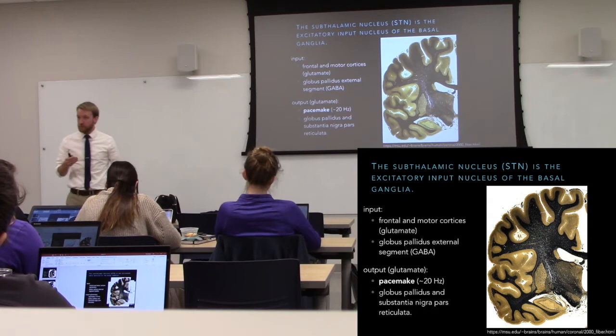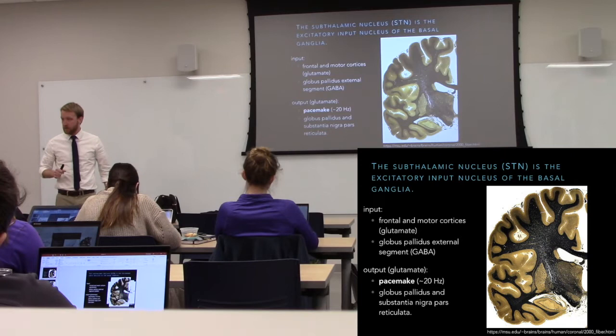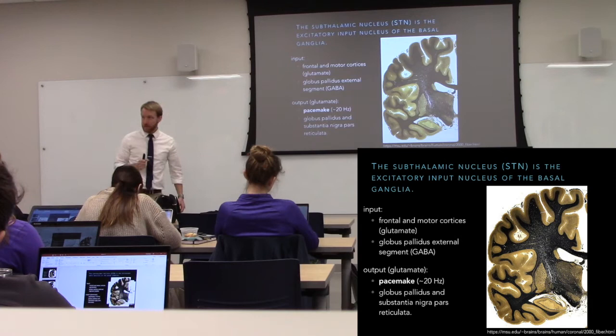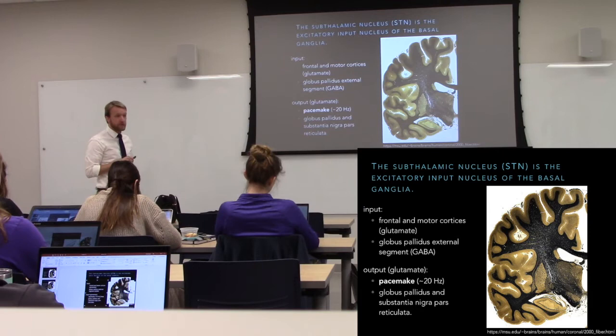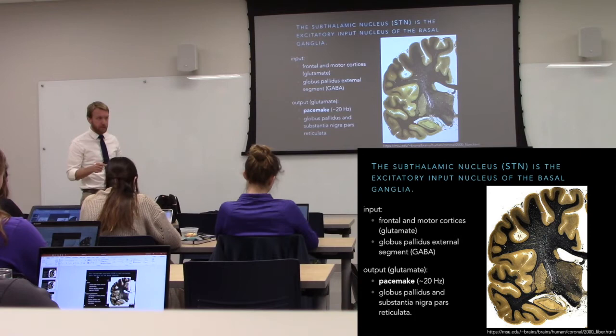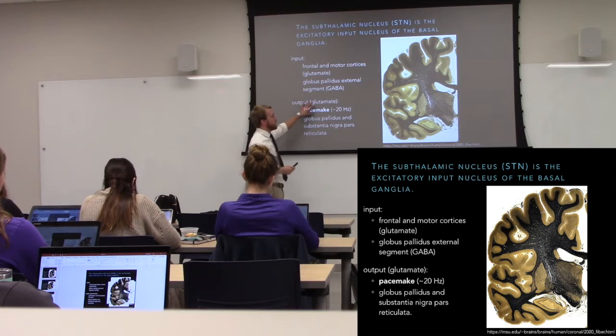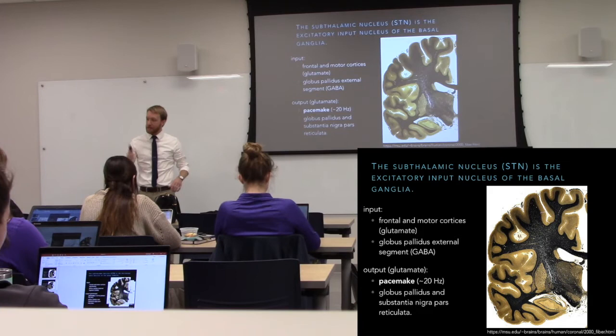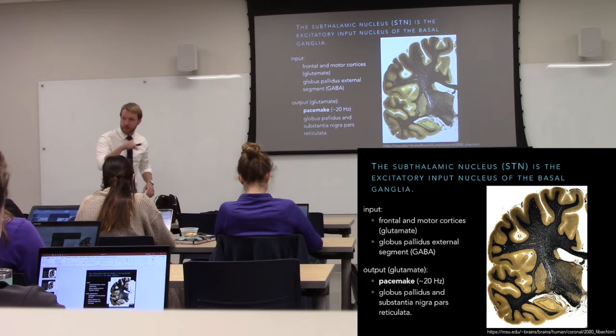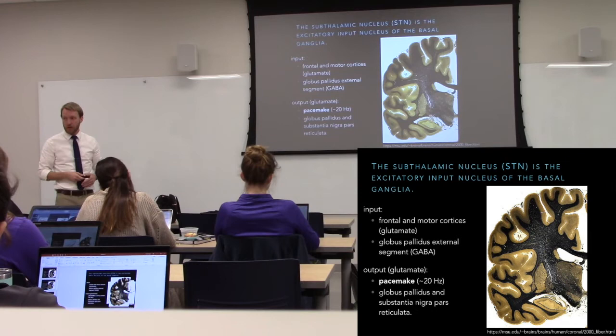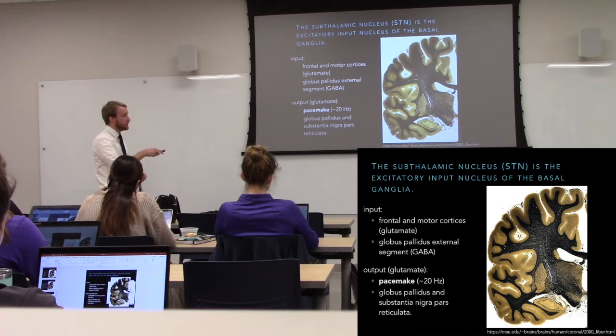The subthalamic nucleus is very different from the striatum. They're both input nuclei, but STN neurons are glutamatergic — so they're excitatory. They also pacemake, meaning they're always firing action potentials. They're going to get input from the cortex and also from other structures within the basal ganglia — in this case the globus pallidus external segment. That pacemaking allows them to respond to both types of input: excitatory input from the cortex increases their rate of firing, while inhibitory input from the GPe decreases it. If they didn't pacemake, GABAergic input wouldn't be as meaningful — they can't fire less than zero hertz. So their pacemaking allows them to respond to both excitation and inhibition.